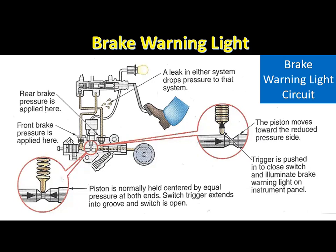If a fluid leak occurs and pressure from one master cylinder piston is low, the brake warning light piston moves toward the higher pressure side. This action grounds the brake warning light bulb through the switch and the bulb is illuminated. This circuit also has a bulb check proving circuit when cranking. On many vehicles, the red brake warning light is also illuminated if the parking brake is applied, the brake pad sensors detect worn lining, or the brake fluid level is low.